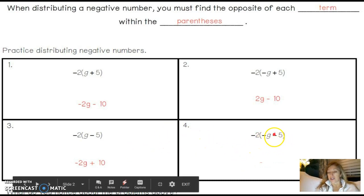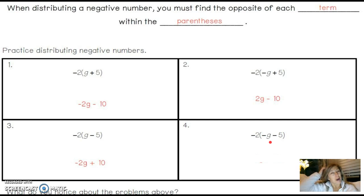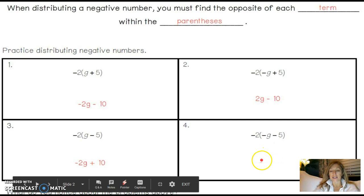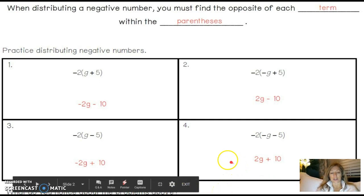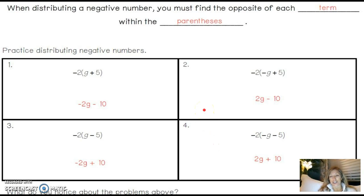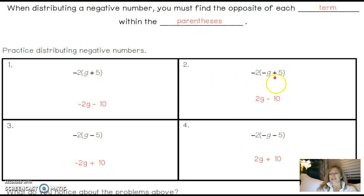Number 4: notice everything in these parentheses is negative, so what do we think we'll have in our answer? Positives. 2 times G is 2G but because I'm multiplying by negative I get positive 2G. 2 times 5 is 10; the negative becomes positive, so the answer is positive 2G plus 10. Notice all four problems have 2G's and 10s — the only difference is the sign. When a term was positive it's now negative, and when it was negative it's now positive.